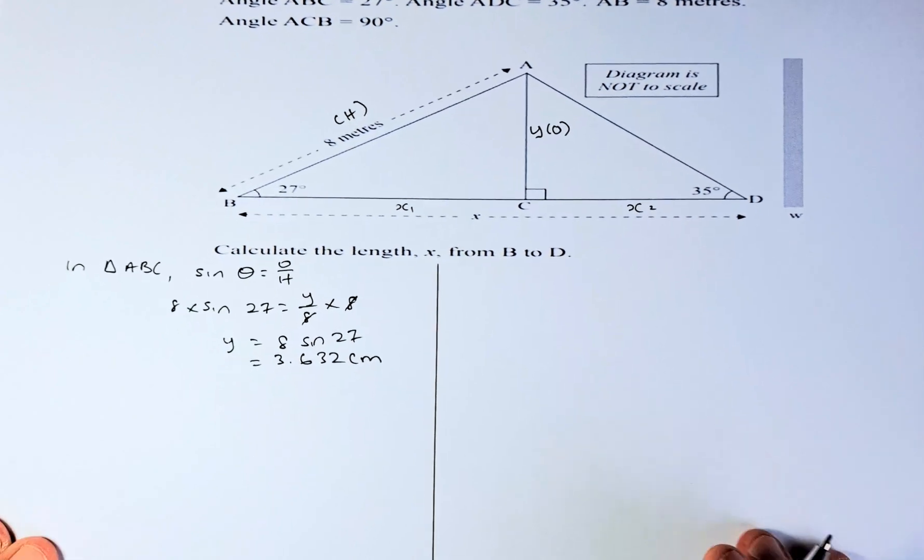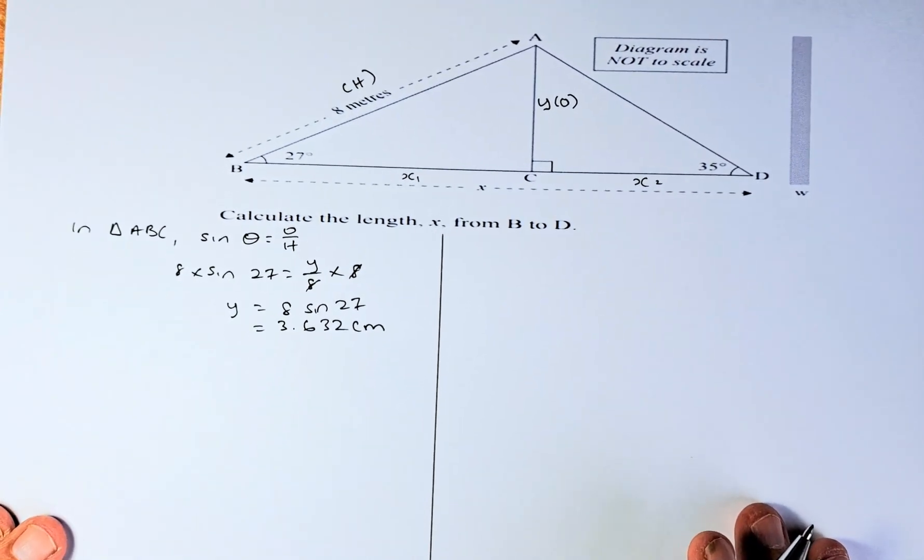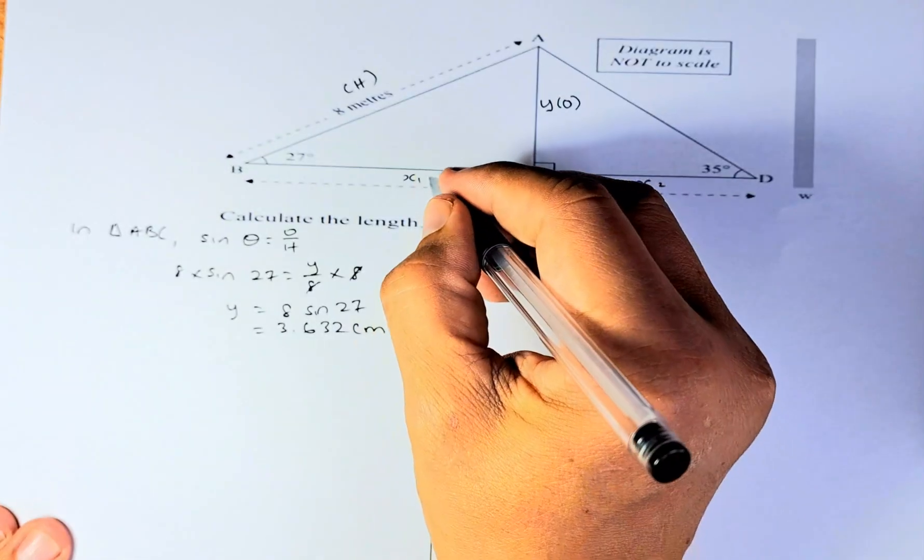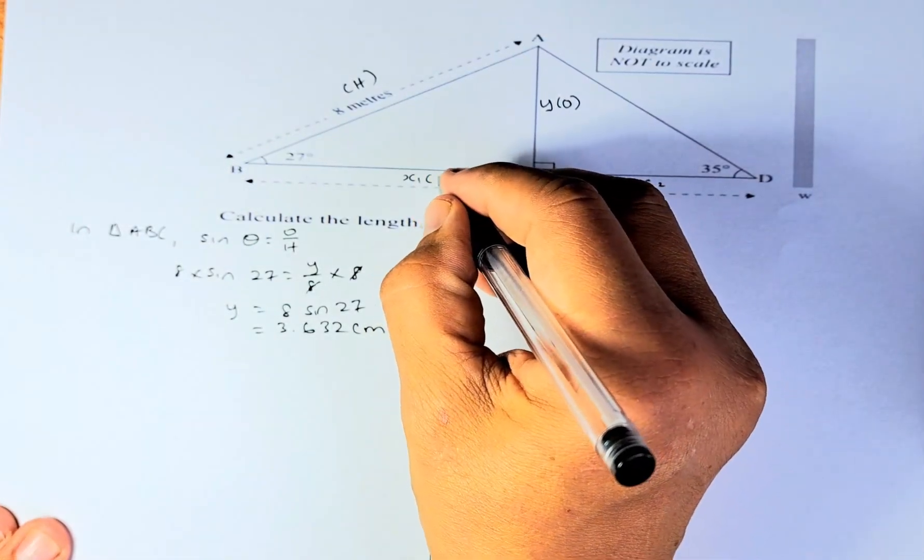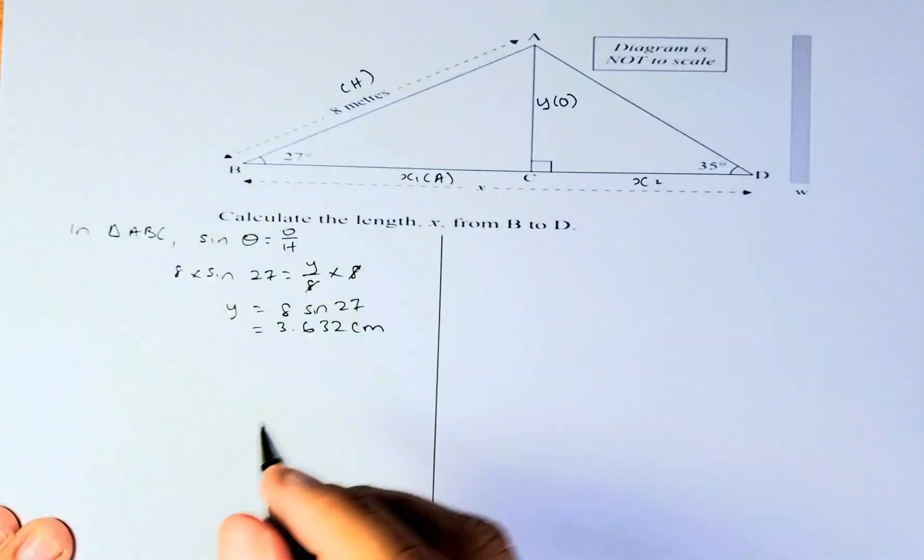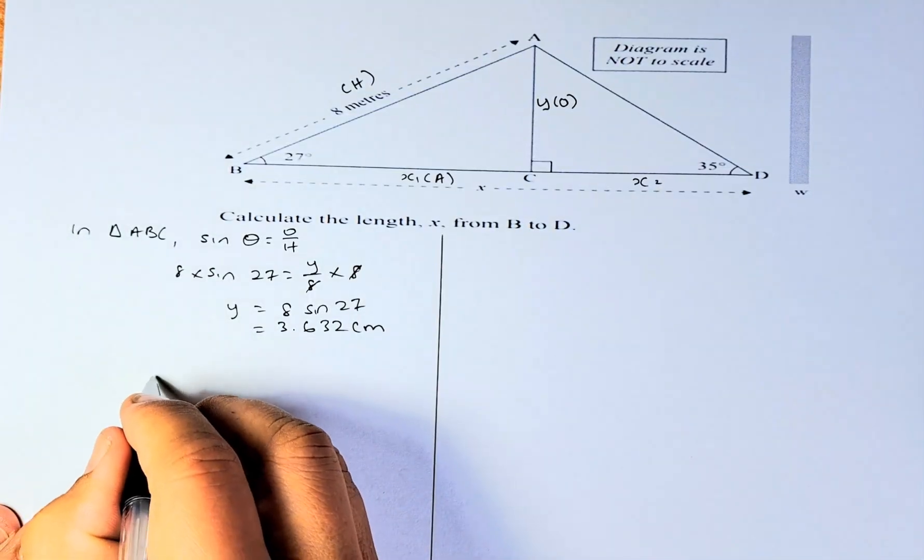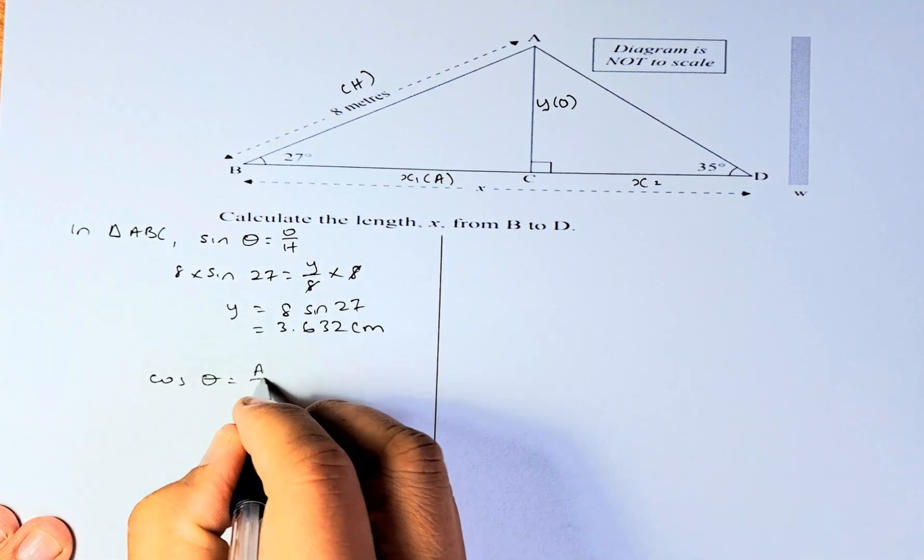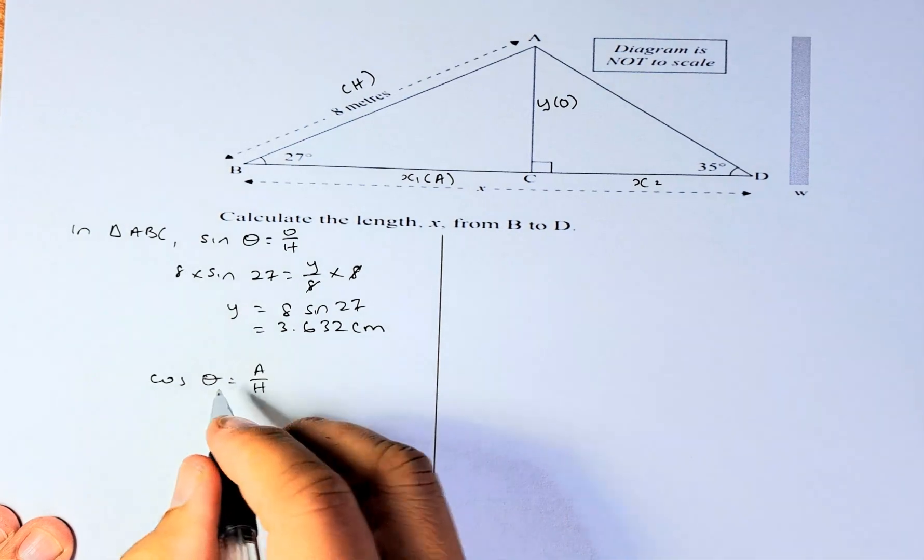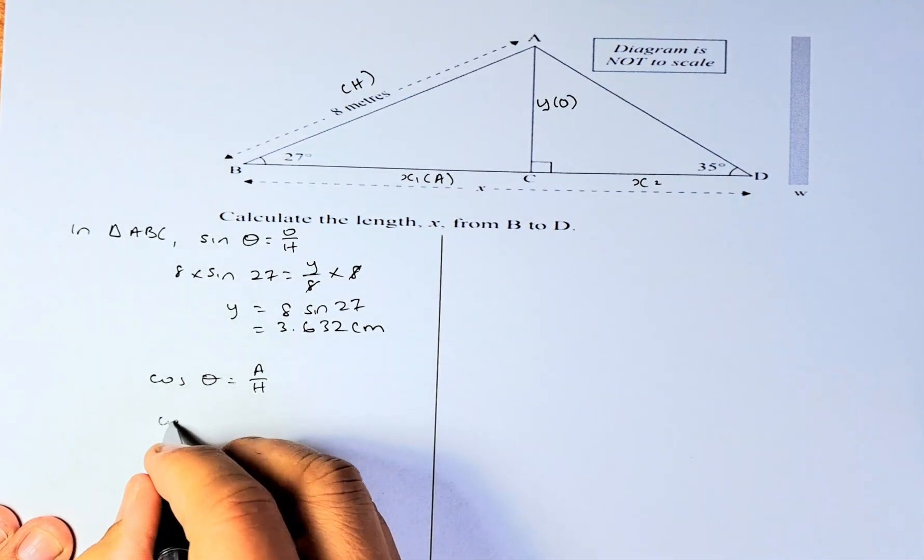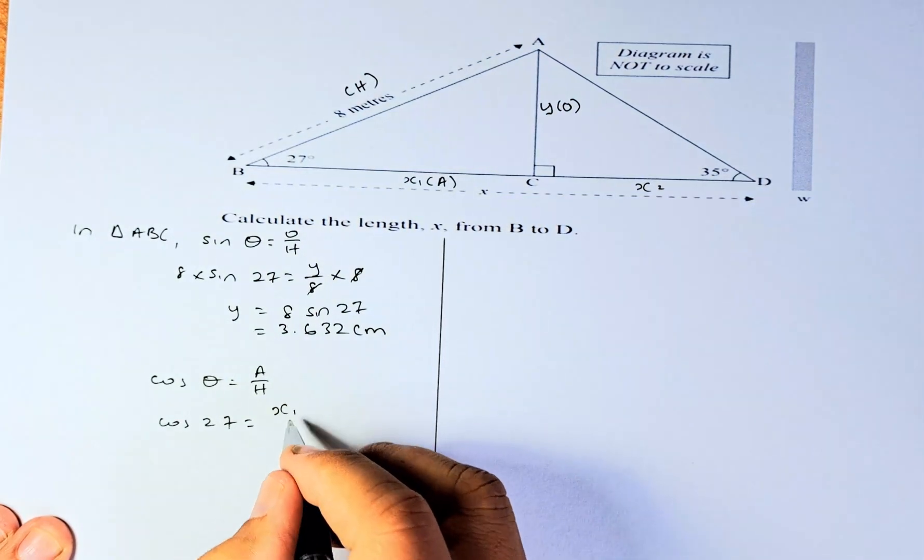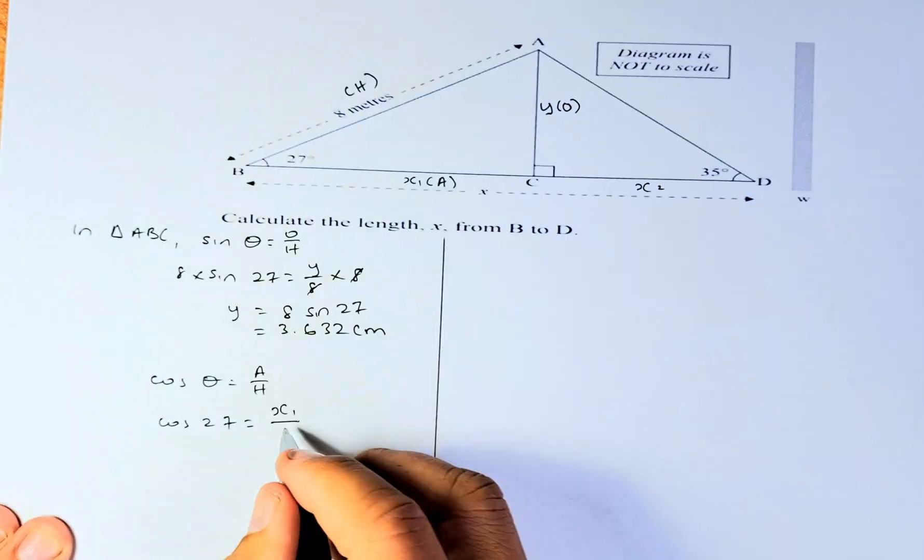Now we are going to calculate the length BC. X1 or BC is going to be the adjacent, and we're going to use the hypotenuse. So we've got A and H, so we use cos. Cosine theta equals A over H, adjacent over hypotenuse. Now we're going to substitute the value. Cosine 27 equals the adjacent, which is the unknown X1, over the hypotenuse, which is 8.